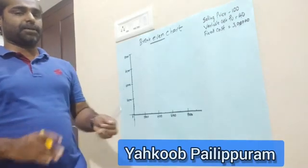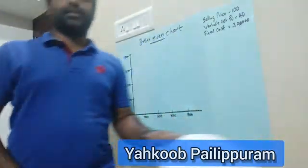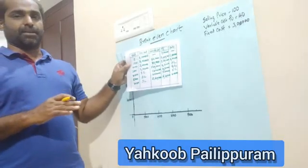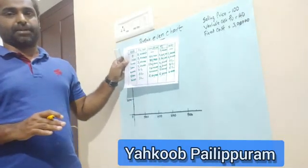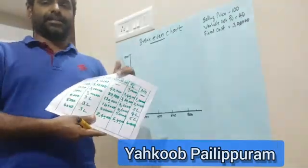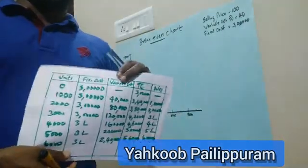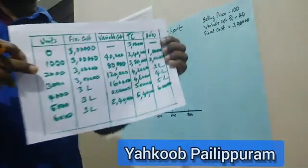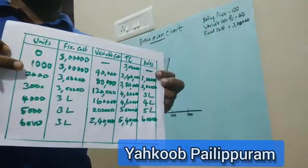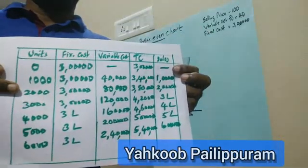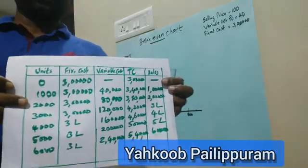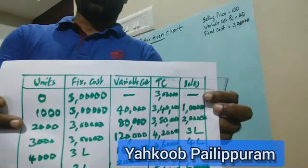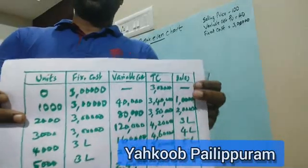To draw the graph, we first need a table. In this table, we will have columns for units, fixed cost, variable cost, total cost, and sales.